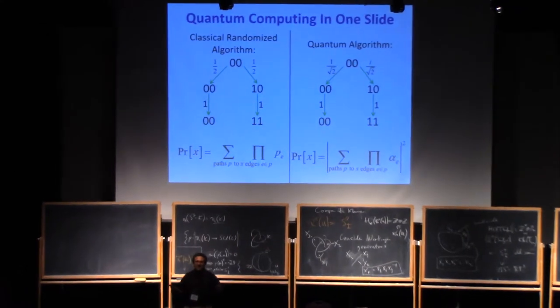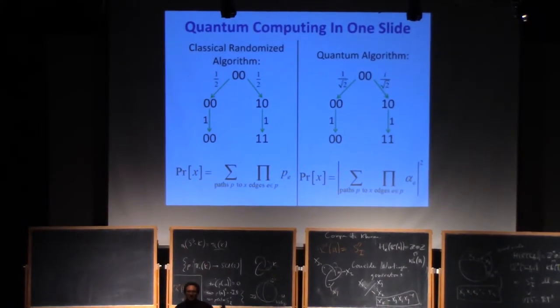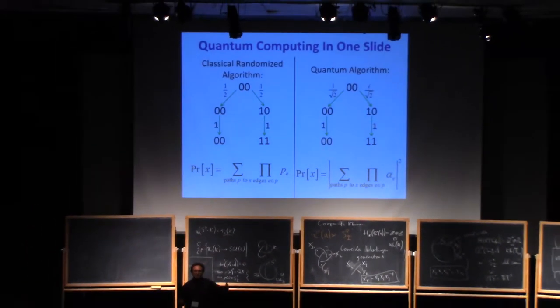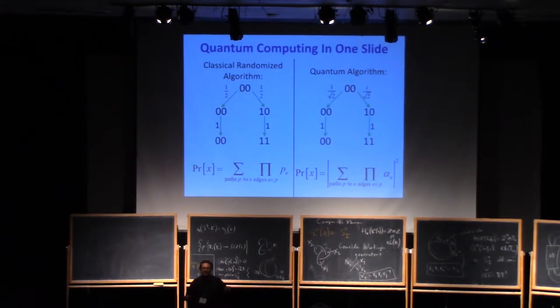An efficient quantum algorithm is any sequence of those simple operations that chains together a number of them that only grows polynomially with n, with the size of the instance you're trying to solve. Any problem that can be solved by such an algorithm with high success probability - say 90% or something - is said to be in the class BQP that I mentioned before. And by the way, if you don't like 90% success probability, you could just keep repeating your algorithm a bunch of times and take the majority vote. Make it 99.99999%.